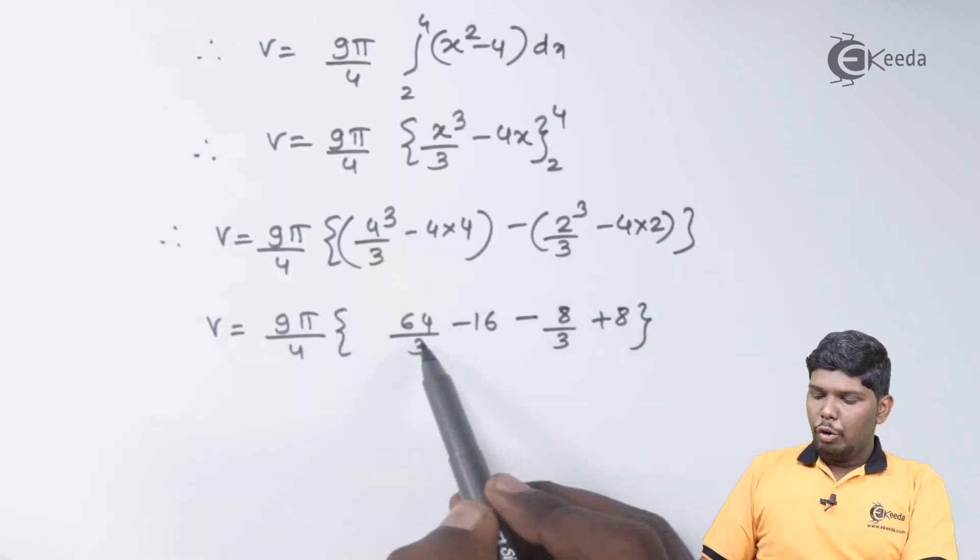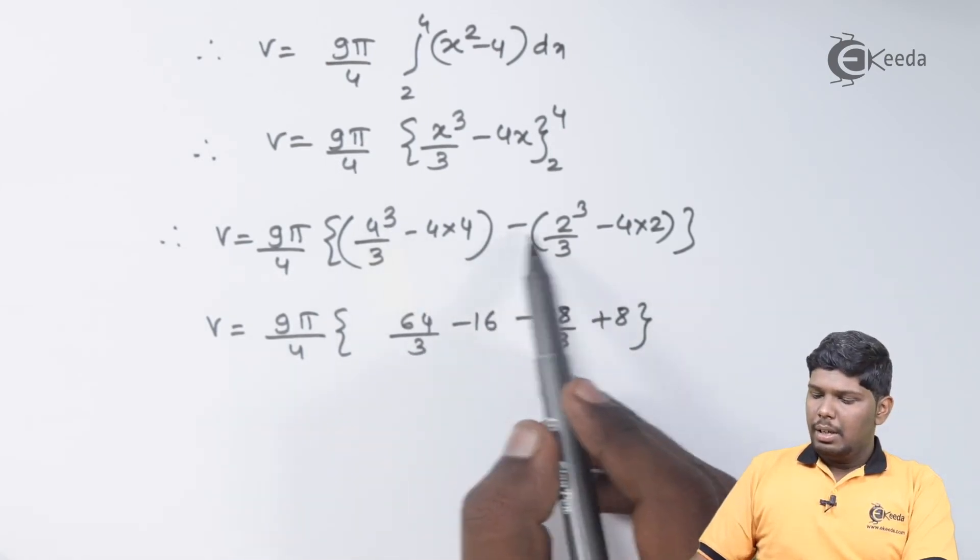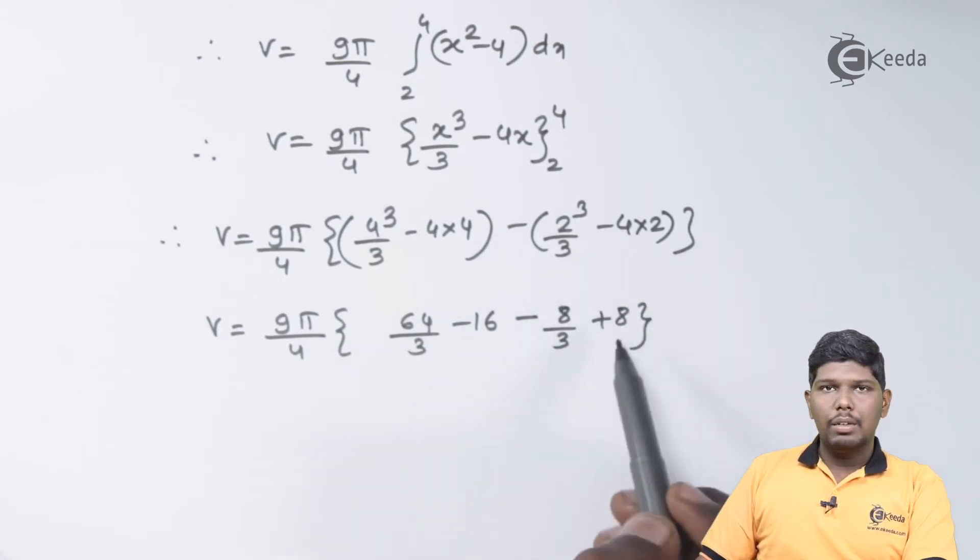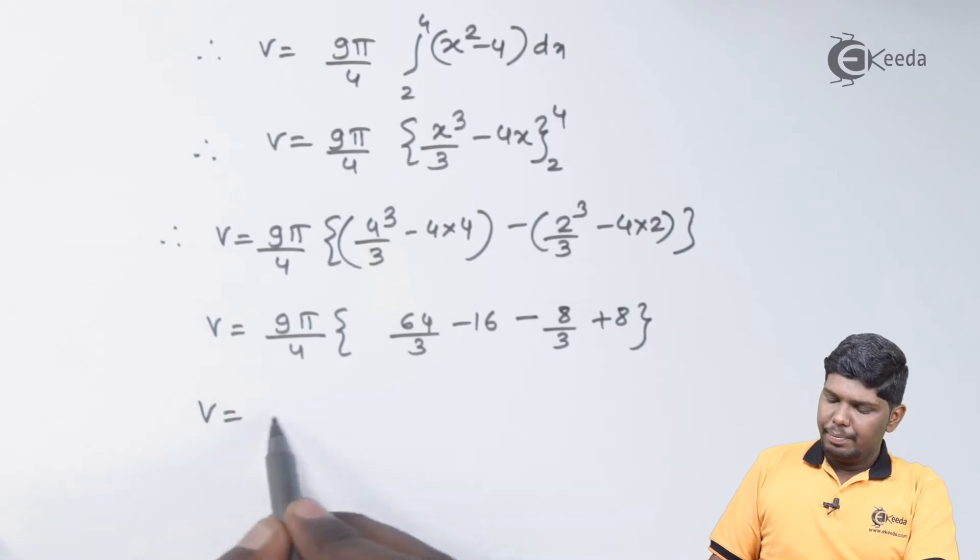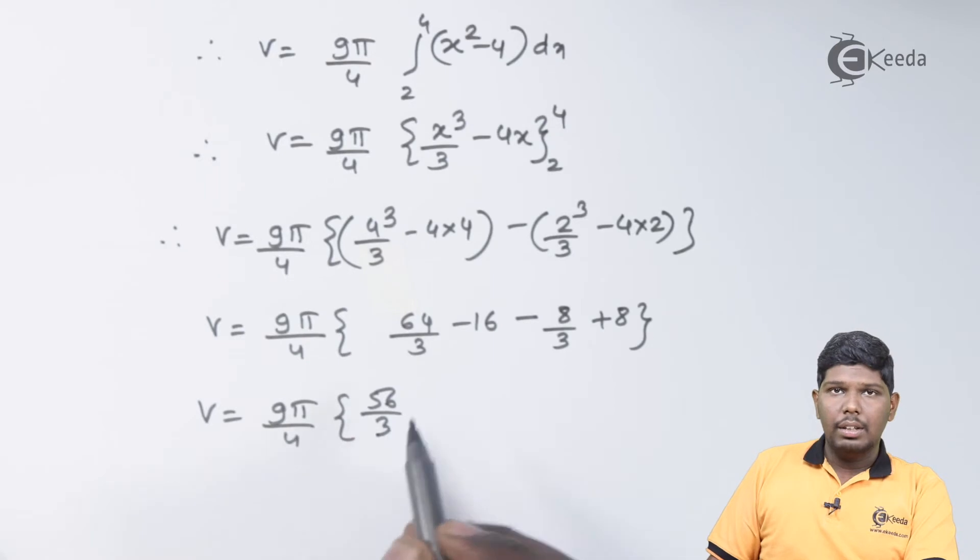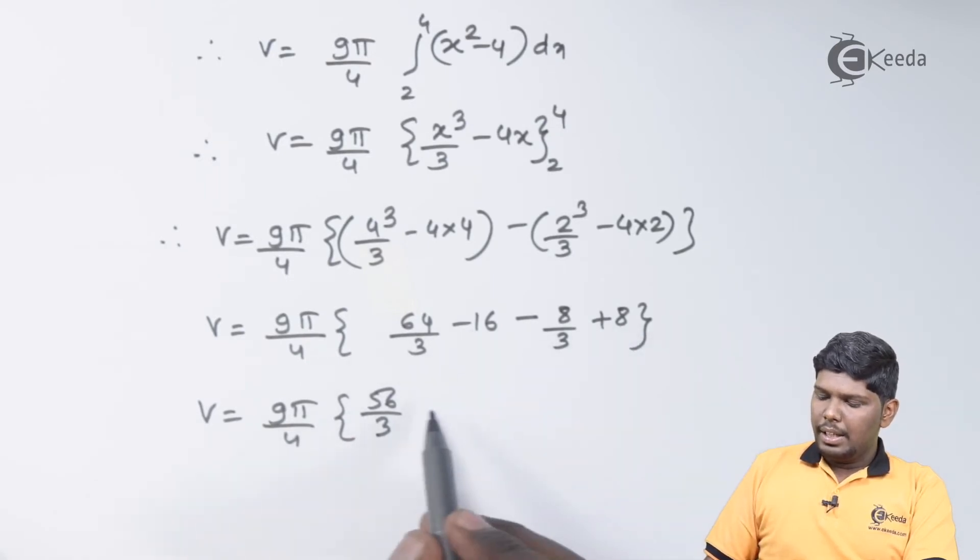This will give you 64/3 - 16 - 8/3 minus into minus will give you plus 4×2 is 8. 64/3 - 8/3 will give you 56/3 - 16 + 8 will give you -8.